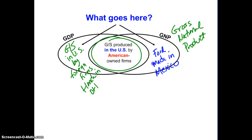So that's a brief introduction to some of the alternative ways of looking at national income accounting. In class, you're going to look at some other calculations like per capita GDP and real GDP, but it is very important to understand this difference between GDP and GNP.